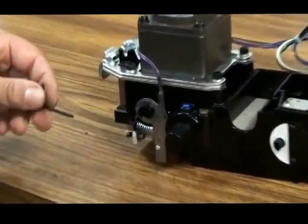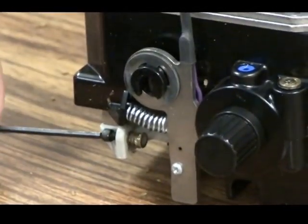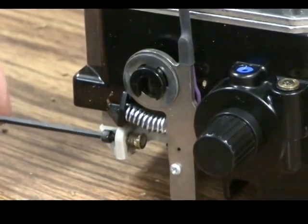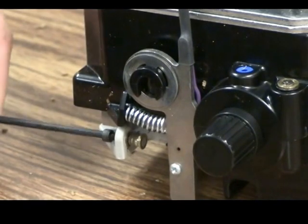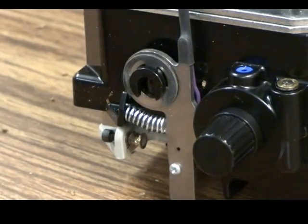So you take your 3/32 Allen wrench and just give it a nice quarter to half a turn. That's going to make the machine compact more tobacco in the chamber.